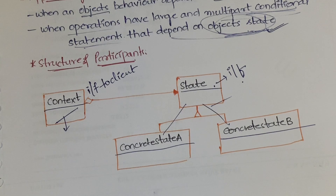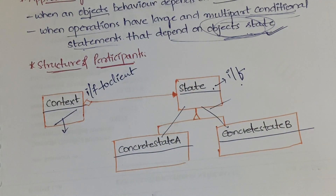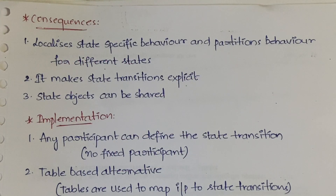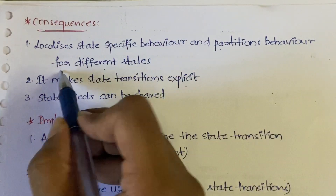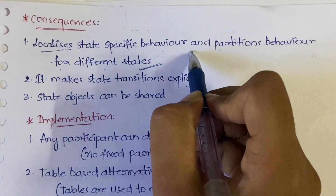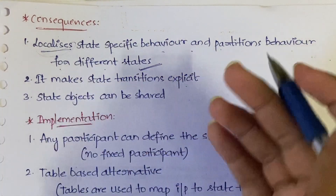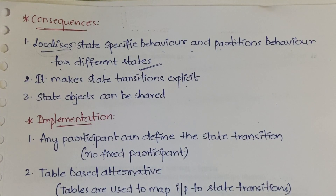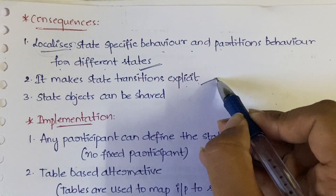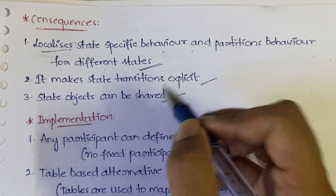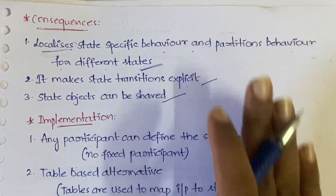In the structure section, write the heading 'Structure,' draw the diagram, then write 'Participants' and describe each one. Moving to consequences: the State Pattern localizes state-specific behavior and partitions behavior for different states. It makes state transitions explicit, and state objects can be shared. These three are the key consequences of the State Pattern.